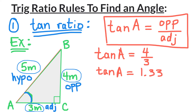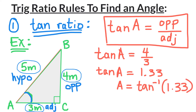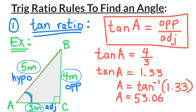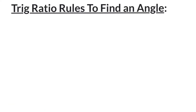Now we want to solve for angle A. We bring the tangent to the other side, and the inverse of tan is tan inverse. To find angle A, press second or shift on your calculator, then the tan function to get inverse tan, then plug in 1.33. You should end up with 53.06 degrees, which is approximately 53 degrees.